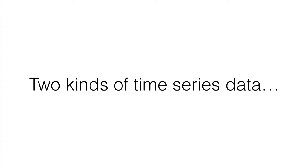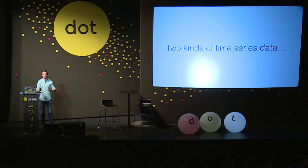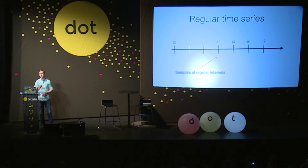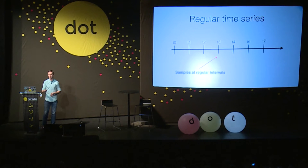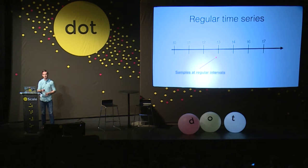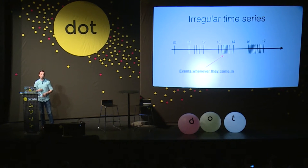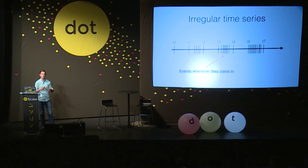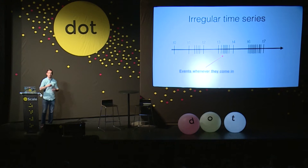When I look at time series data, I have two different ways of looking at it — two different kinds of data. The first is what most people think about: regular time series data, where you have samples at regular intervals of time, once every 10 seconds, once a minute. But we're also concerned about irregular time series data — event-driven data that happens either infrequently or sometimes very frequently, but without a regular sampling interval.